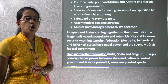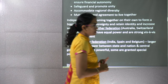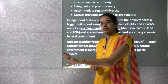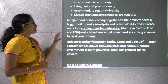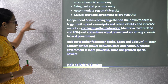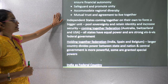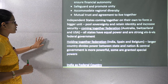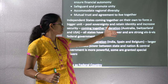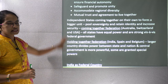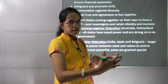There are two basic forms of federalism. In coming together federalism, independent states maintain their own identity and sovereignty and increase their security by coming together — as seen in Australia, Switzerland, and America. All states have equal power and are as strong as the federal government.